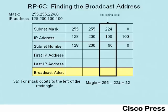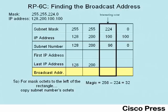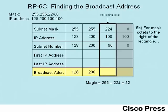Beginning with step 5a: look at the mask octets whose value is 255, or visually, look at the octets to the left of the rectangle. For those octets, simply copy the subnet number's value down to the broadcast address. Then for any octets fully to the right of the rectangle — octets whose mask value is zero — write down 255 in that octet of the broadcast address. So in step 5a we copied the subnet number octets, and in step 5b we wrote down 255s in the octet to the right, leaving a single interesting octet to figure out.